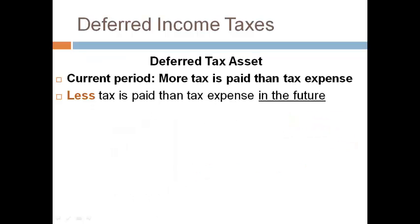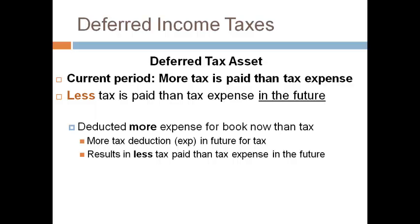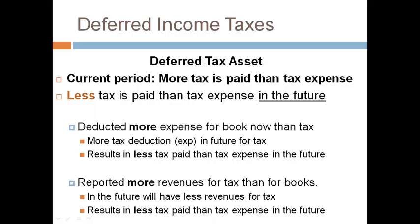A deferred tax asset occurs when less tax will be paid in the future than tax expense. This comes about when an expense deduction is greater for books than for tax in the current year; in the future, the expense tax deduction will be more and the company will have less taxable income and will pay less tax. It also comes about when a company reports more tax revenue than book revenue in the current period — more tax revenue now makes more taxable income now and more tax to pay now, but there will be less tax revenue in the future, creating less taxable income and less taxes to pay. More tax payable now and less tax payable in the future creates a deferred tax asset.